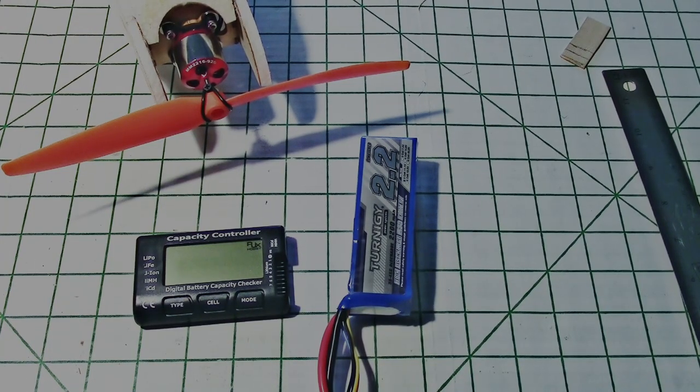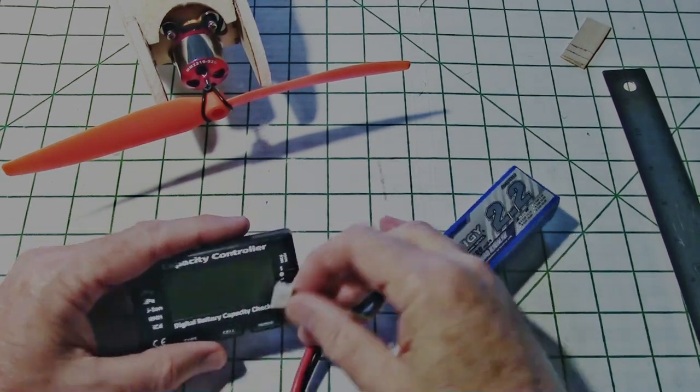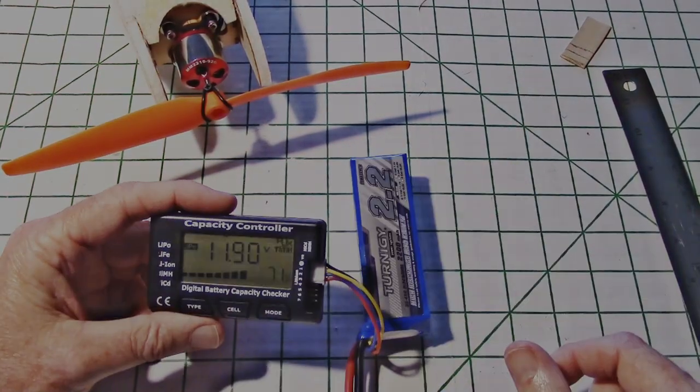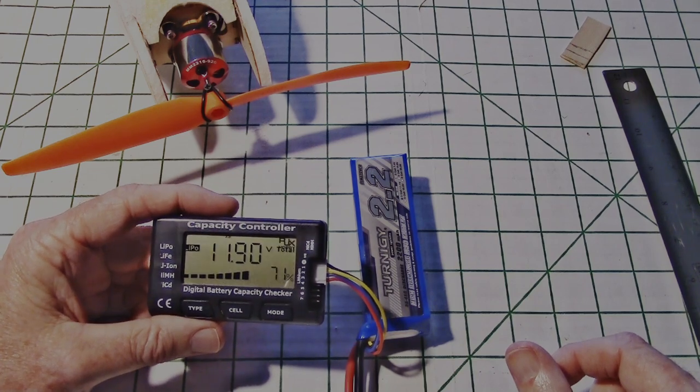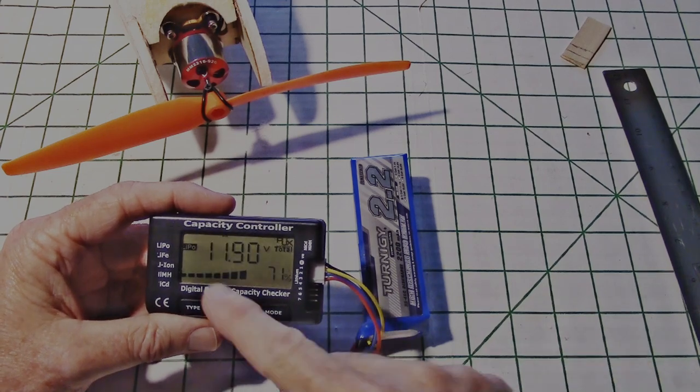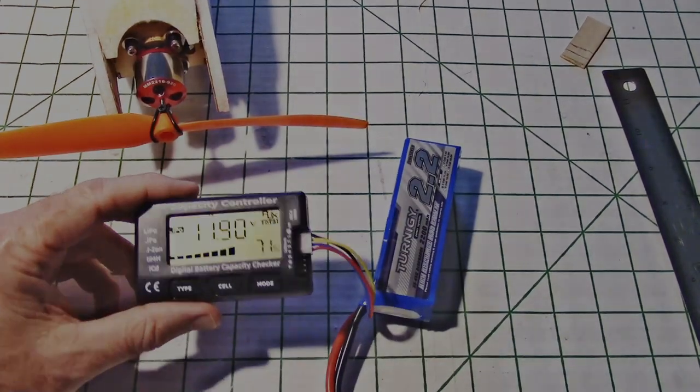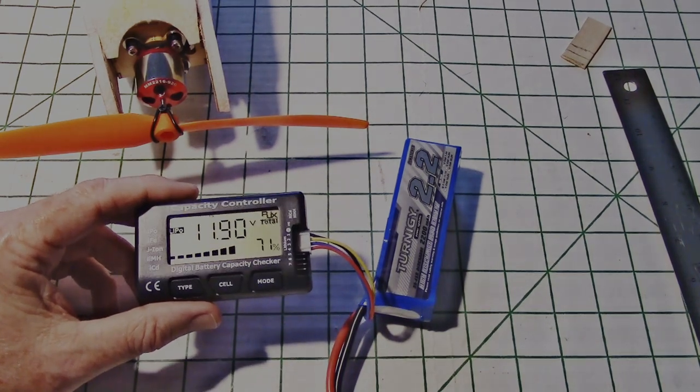Almost forgot. You probably would like to know how much battery I used on those two flights. So let's check it out here. Here I thought it was sucking a lot of juice out of the thing. Apparently it's very efficient. It's only 71%, or you can see right here the actual voltage. But yeah, that's it. So a great little flyer and very efficient.